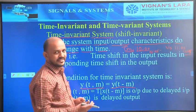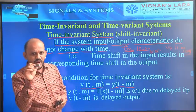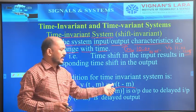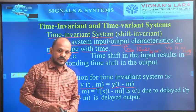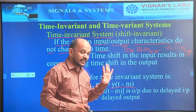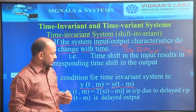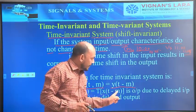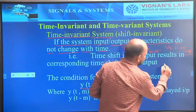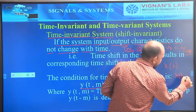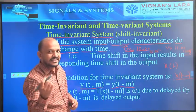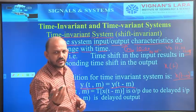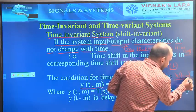What is y(t, m) and y(t − m)? We know y(t) is the output. y(t, m) is nothing but the transformed version of x(t − m) — the delayed input. x(t − m) means the input signal x(t) is delayed by m seconds. So y(t, m) is the output due to the delayed input, where the input is delayed by m units.